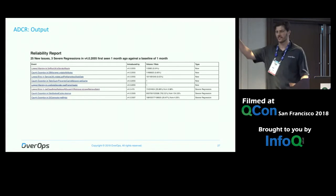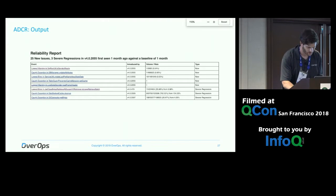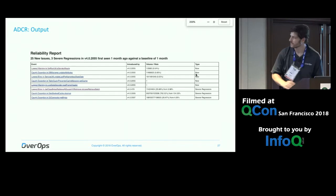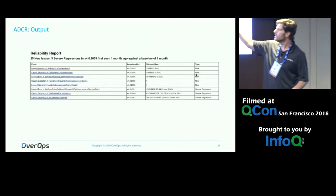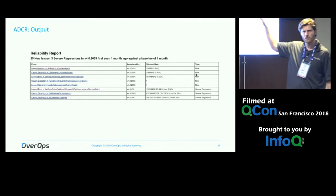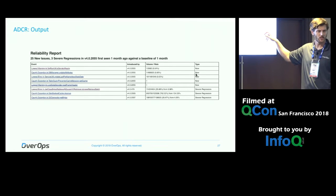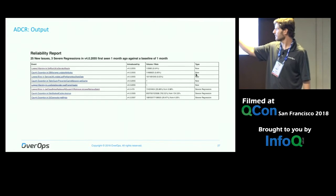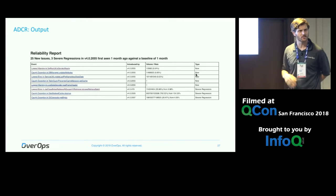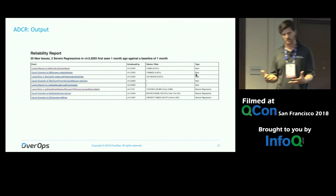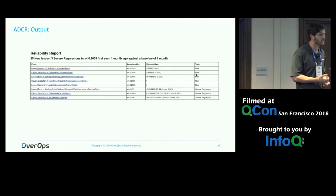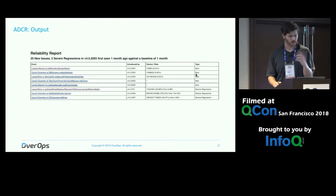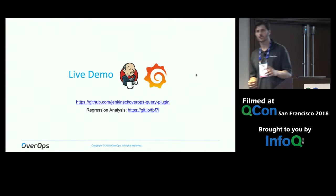Essentially, it's the ability to see after every release how many issues were introduced, which ones are new, and if it's a regression — how many times it's happened out of how many calls into the code and what is the delta. We published a set of algorithms consumable through open source and even through a Jenkins plugin that's open source research. All the links are here for both the code and the regression analyses.